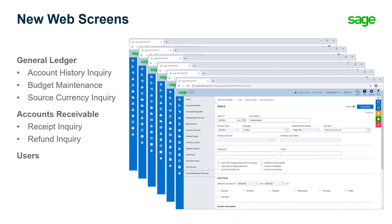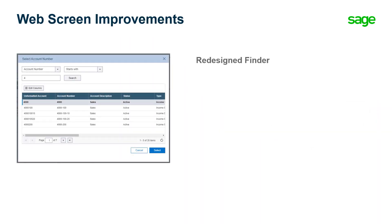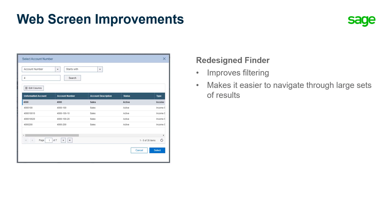This release also includes additional improvements to web screens. We have redesigned the Finder to improve filtering and make it easier to navigate through large sets of results. The improved Finder is available on many screens. For a list, please refer to article 108-348 on sagekb.com.